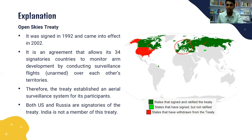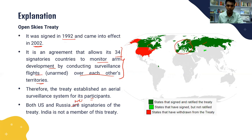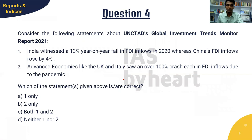Between 2002 and 2016, the US flew 196 flights over Russia compared to 71 flights flown by Russia over the United States. Most of Europe, Russia, the United States, and Canada were members, but since the US withdrew, only the remaining members are in the treaty. The treaty established an aerial surveillance system for participants. Both Russia and USA were signatories, and India is not a member of this treaty at any point.